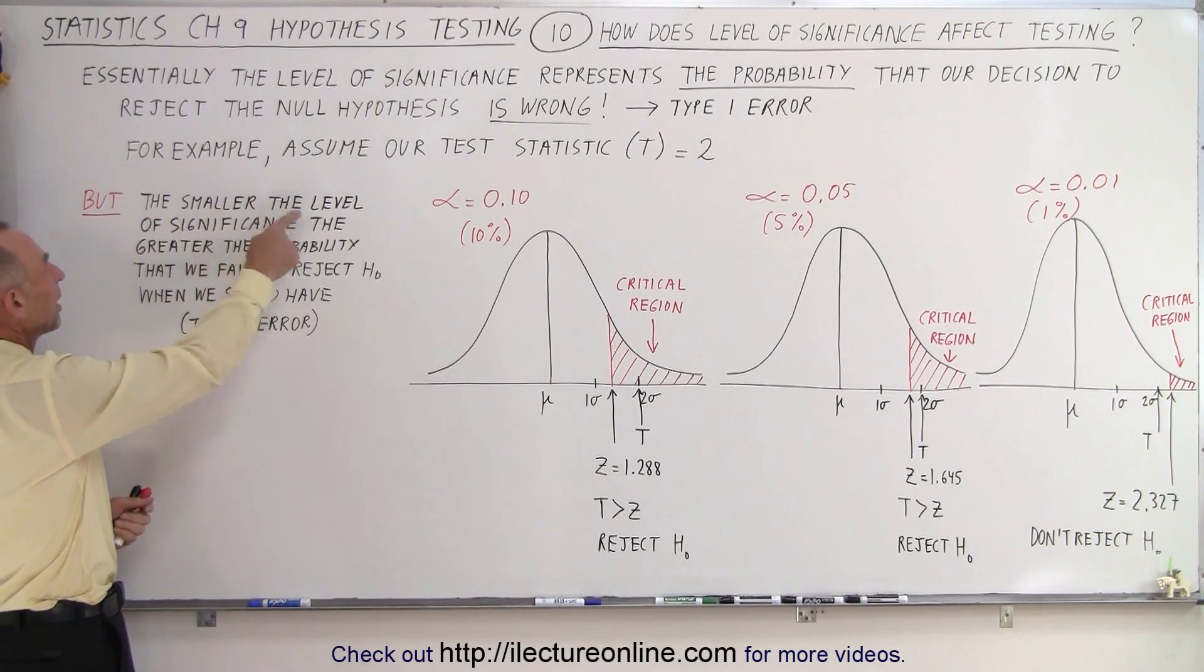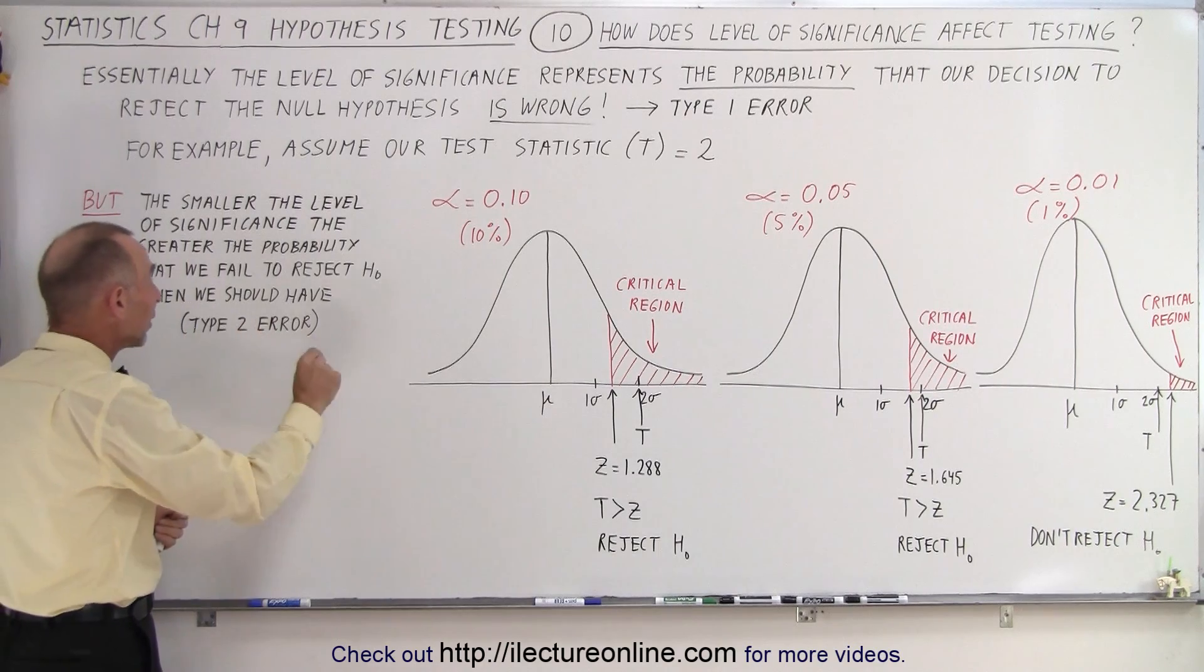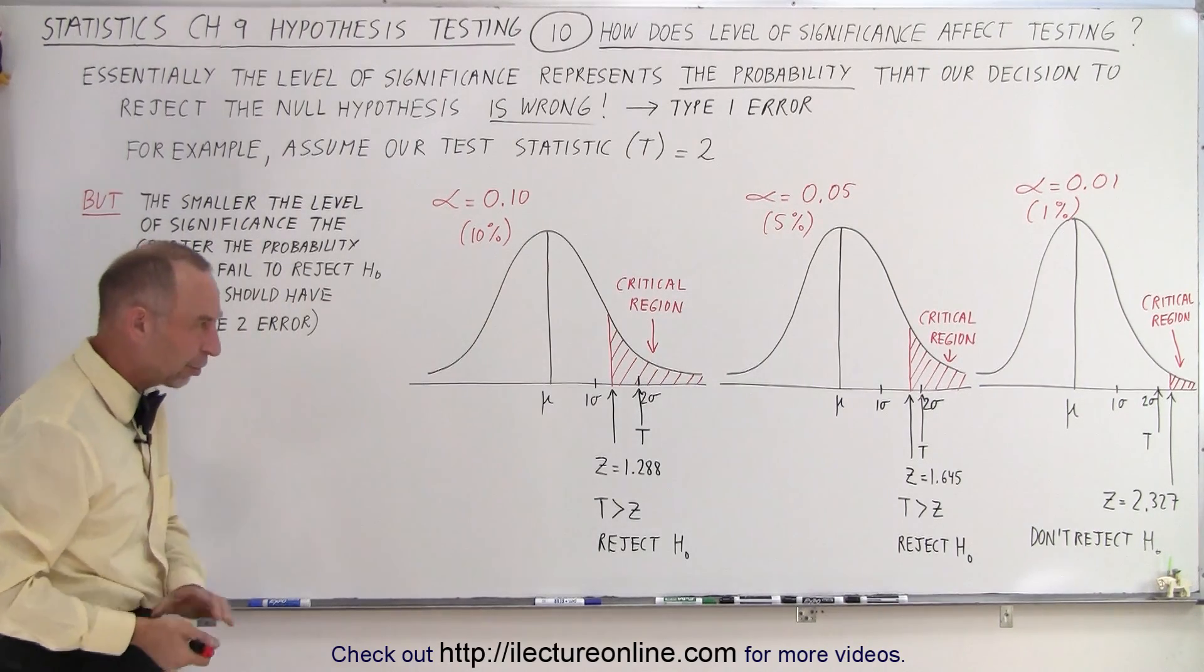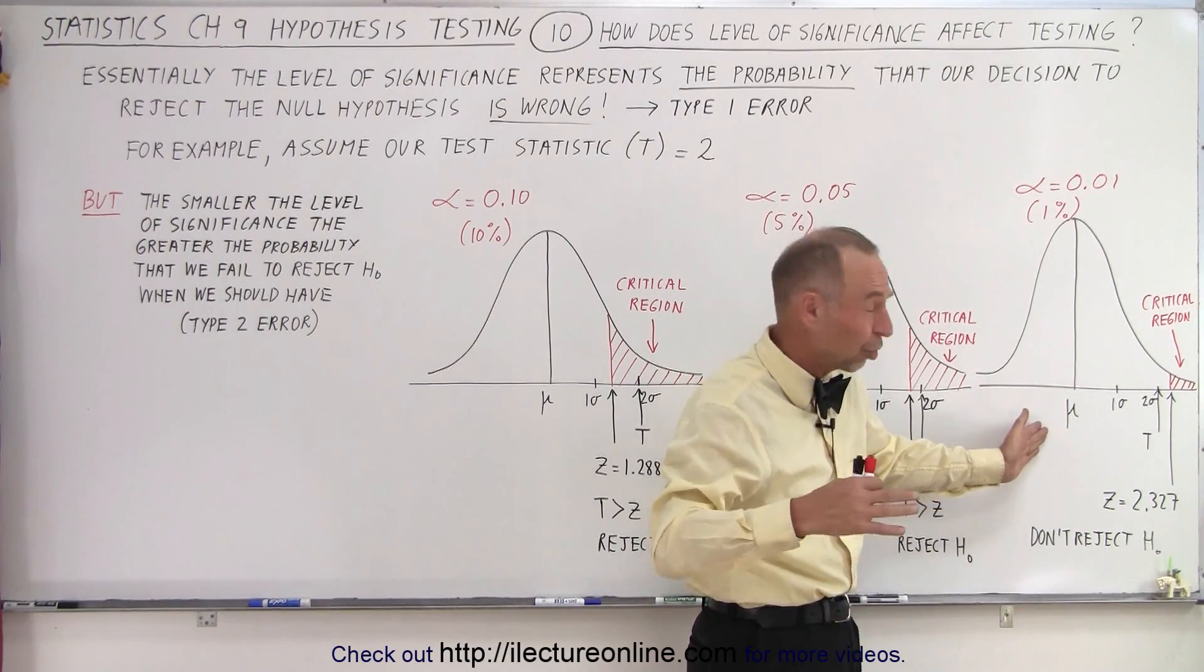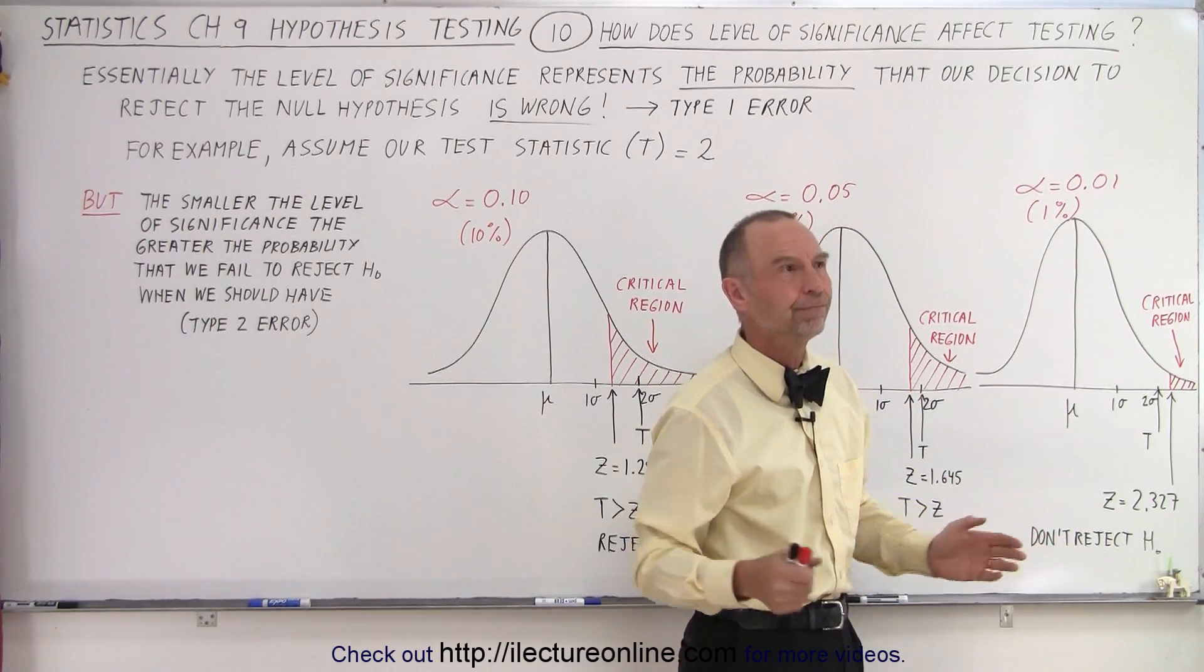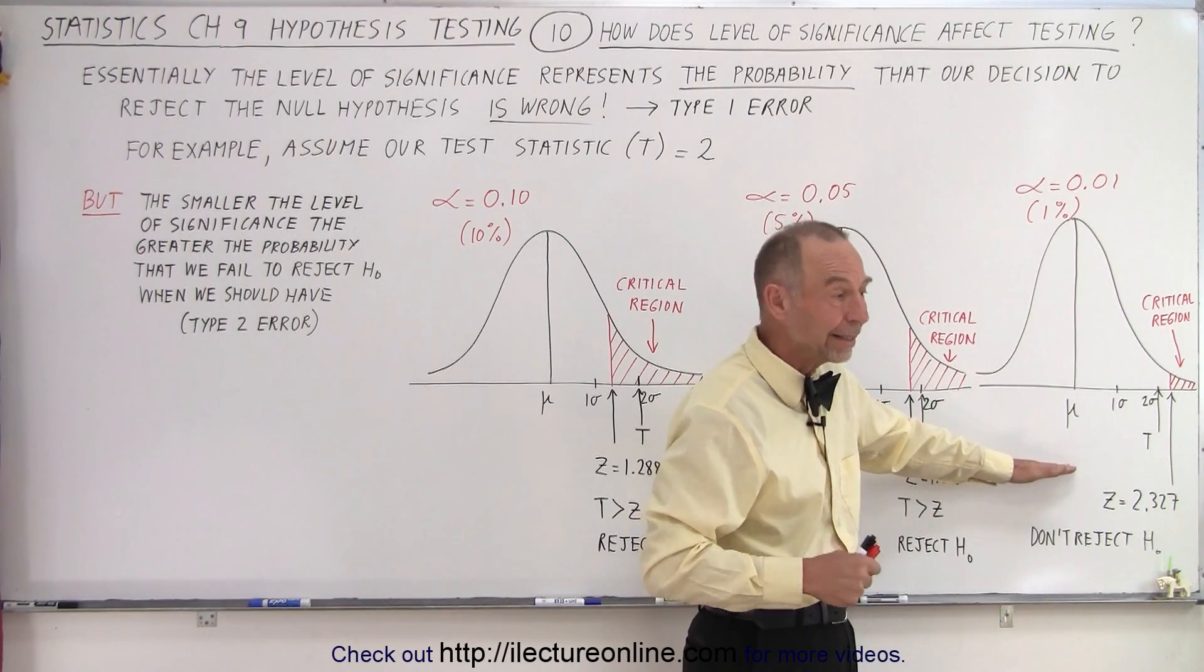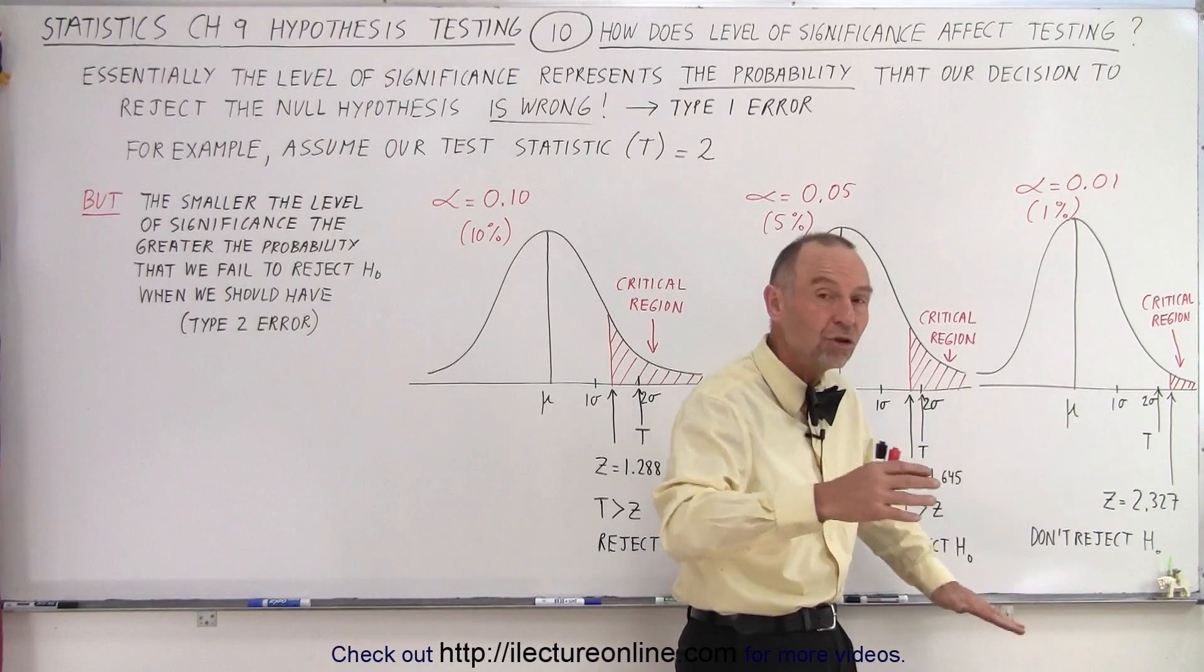The smaller the level of significance, the greater the probability that we fail to reject the null hypothesis when we should have rejected it. That's called a Type 2 error. Here we may be in a situation where the null hypothesis should have been rejected, and we didn't reject it. We made it too tough to be able to reject the null hypothesis, and we end up not rejecting it. Perhaps the null hypothesis was something we should have rejected.